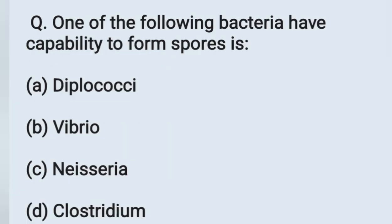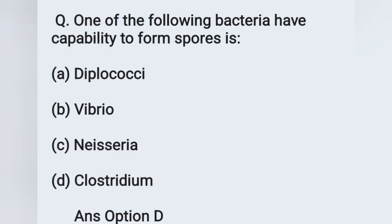The next question: Which of the following bacteria has the capability to form spores? Option A: Diplococci, option B: Vibrio, option C: Neisseria, option D: Clostridium. Spore-forming bacteria are Clostridium species. Option D is the correct answer.